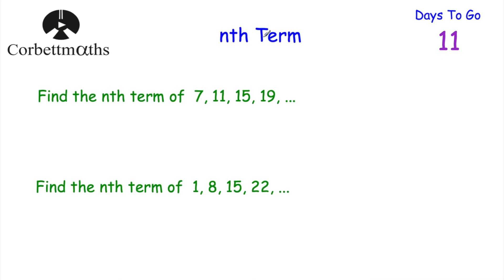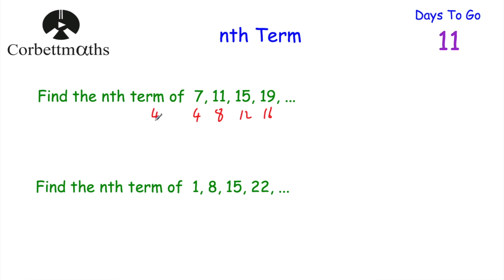Today we're going to be looking at the nth term of linear sequences. Let's start by looking at how to find the nth term of a linear sequence. I'm going to do the first one here, and then there'll be one for you to try. If I wanted to find the nth term of this linear sequence, I'll look at what the sequence is getting bigger by each time. To get from 7 to 11 we add 4, and it's getting bigger by 4 each time. So let's write down the multiples of 4 beneath the sequence: 4, 8, 12 and 16 — and we call them 4n.